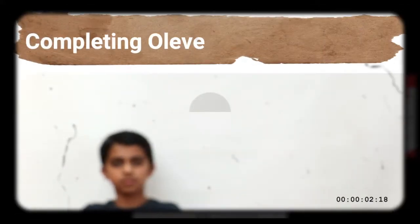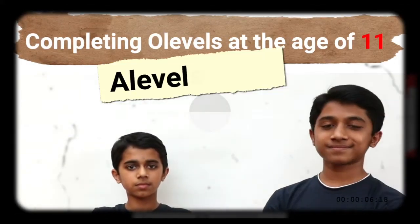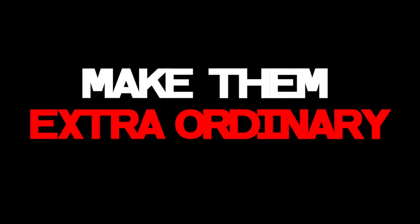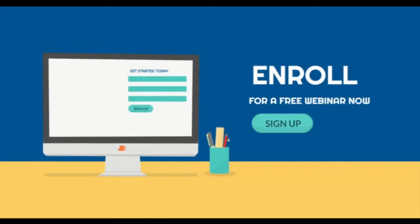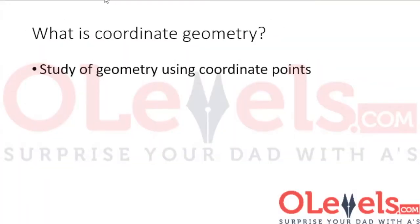Coordinate geometry — completing O-levels at the age of 11 and A-levels at 13. Don't make your kids ordinary, make them extraordinary. Enroll for a free webinar on olevels.com now.